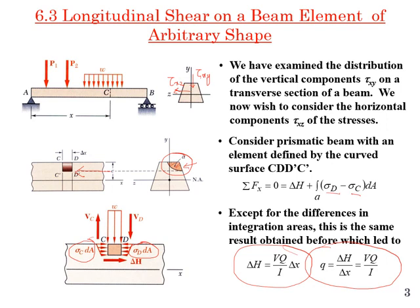The difference now is the area used for Q — the first moment of area. It will now be this arbitrary area, which gives us the horizontal shear component acting on the beam. The direction is the same as before but the location is different. The integration for the first moment of area is now over this arbitrary region, so it is a somewhat more complex concept.